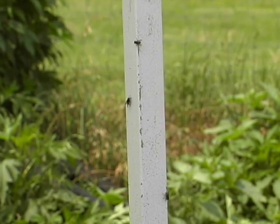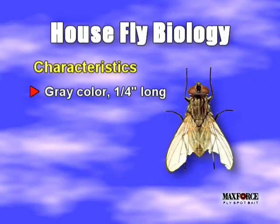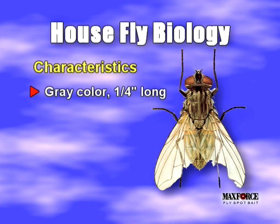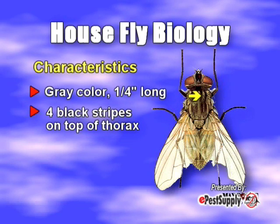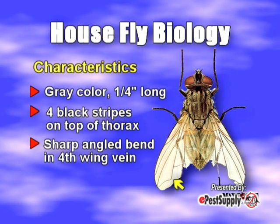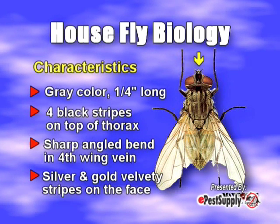Houseflies are common all over the world. The adult housefly is a drab, gray-colored insect slightly longer than a quarter of an inch. Distinguishing markings include four narrow black stripes on the top of the thorax, a sharp angled bend in the fourth wing vein, and two velvety stripes on its face, which are silver above and gold below.